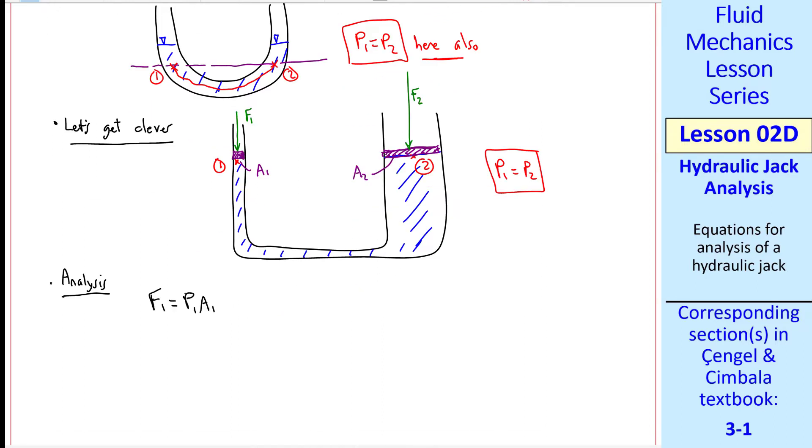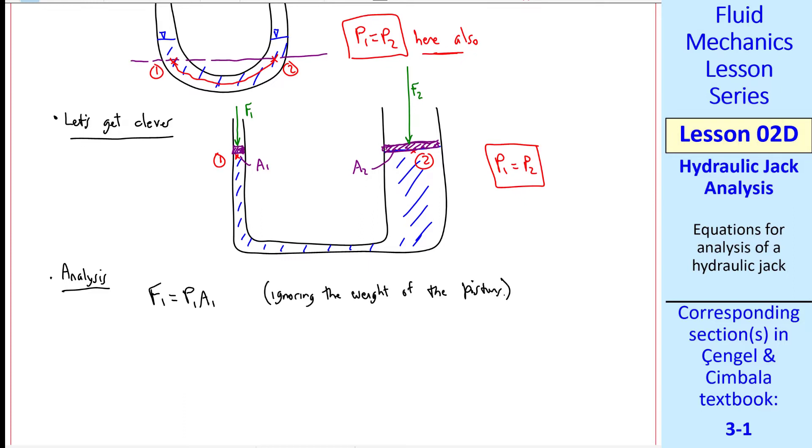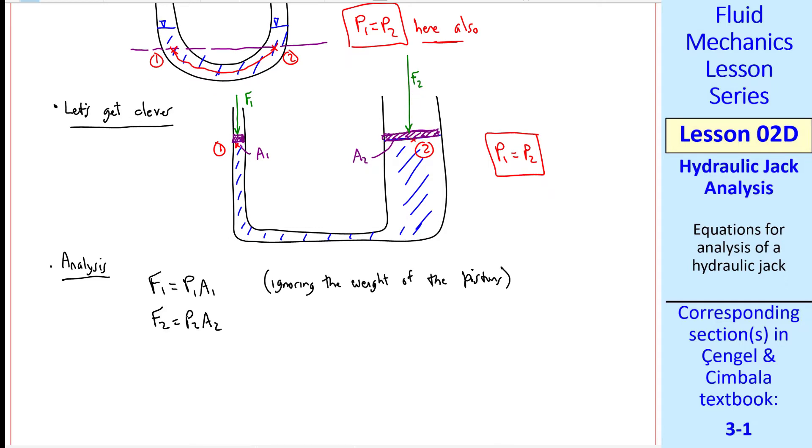Here's a quick analysis. Force F1 has to equal P1 A1. Note that we're ignoring the weight of the pistons. Another way to think about it is that this force is the force you're applying plus the weight of the piston. And this is true on either side. On the other side, F2 is equal to P2 A2.